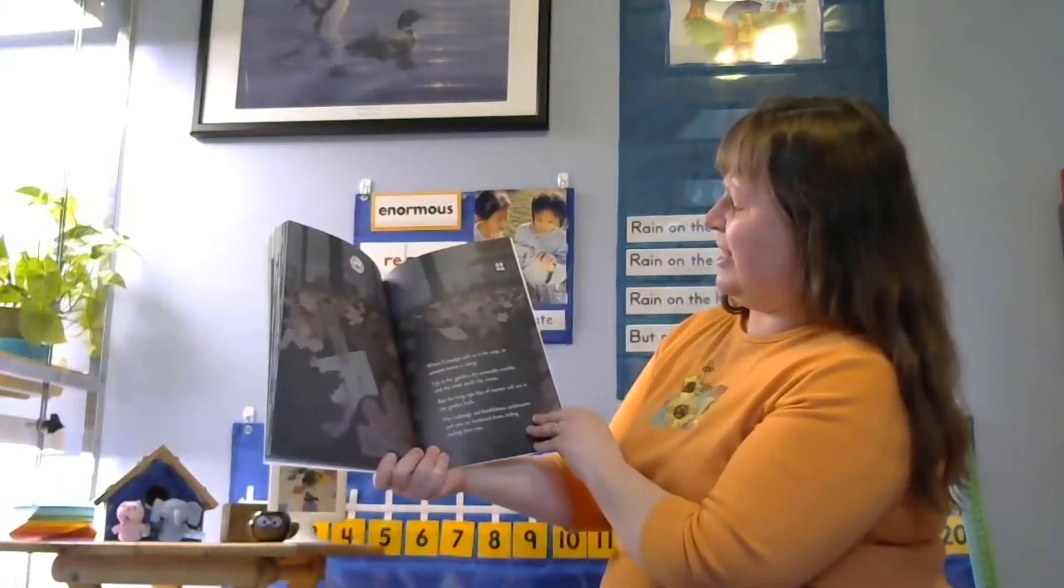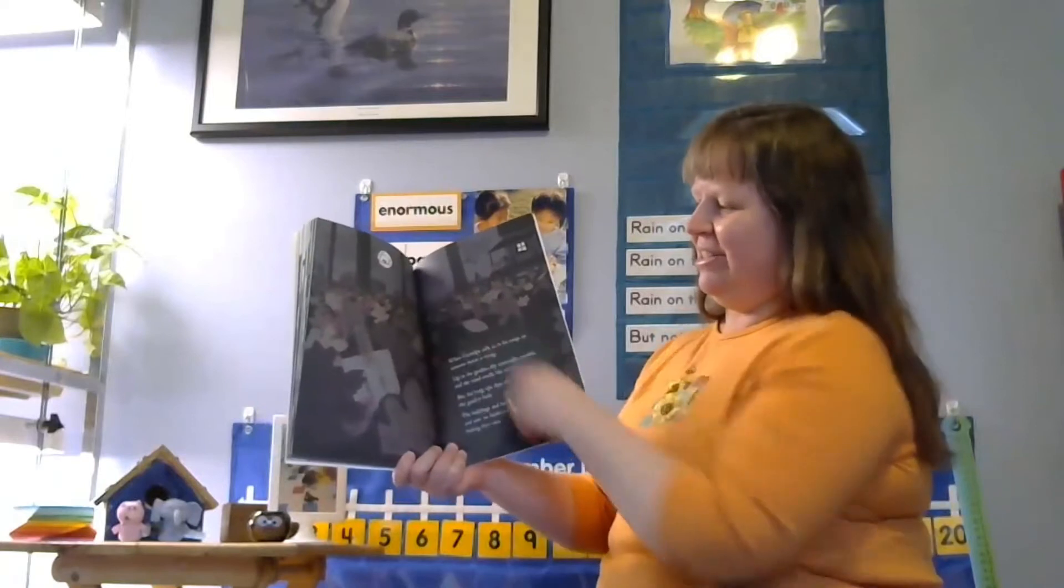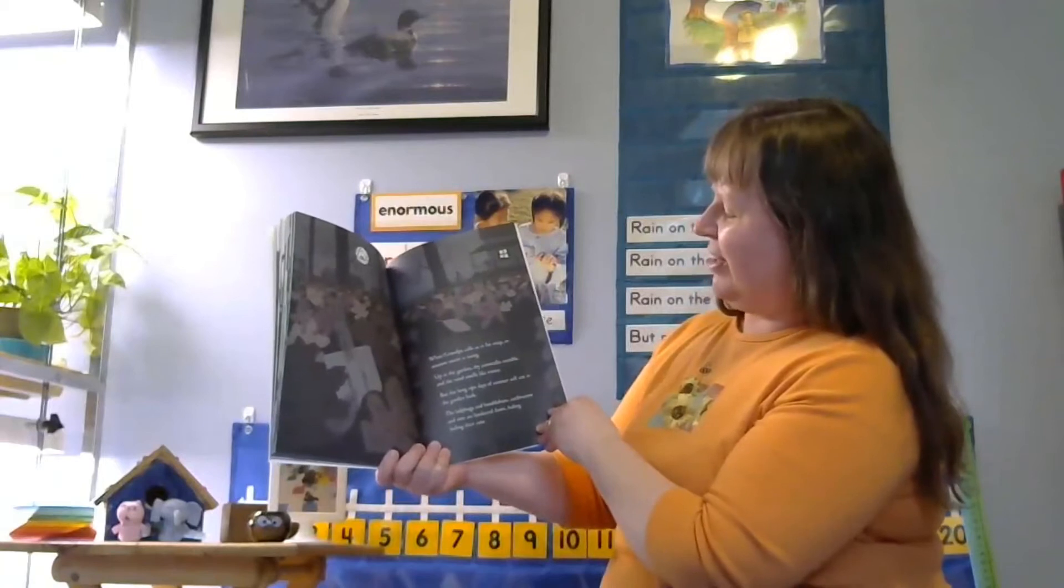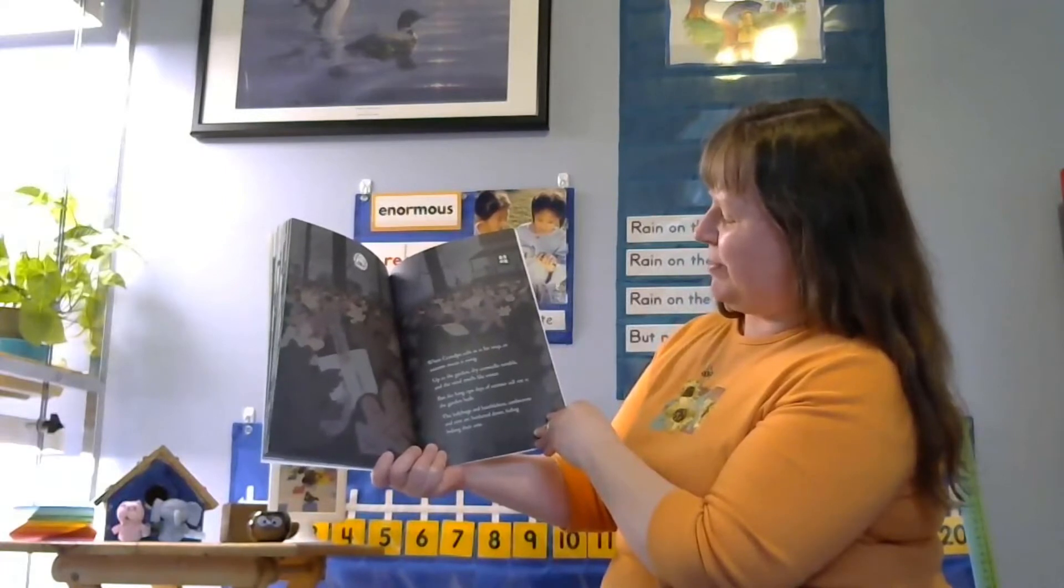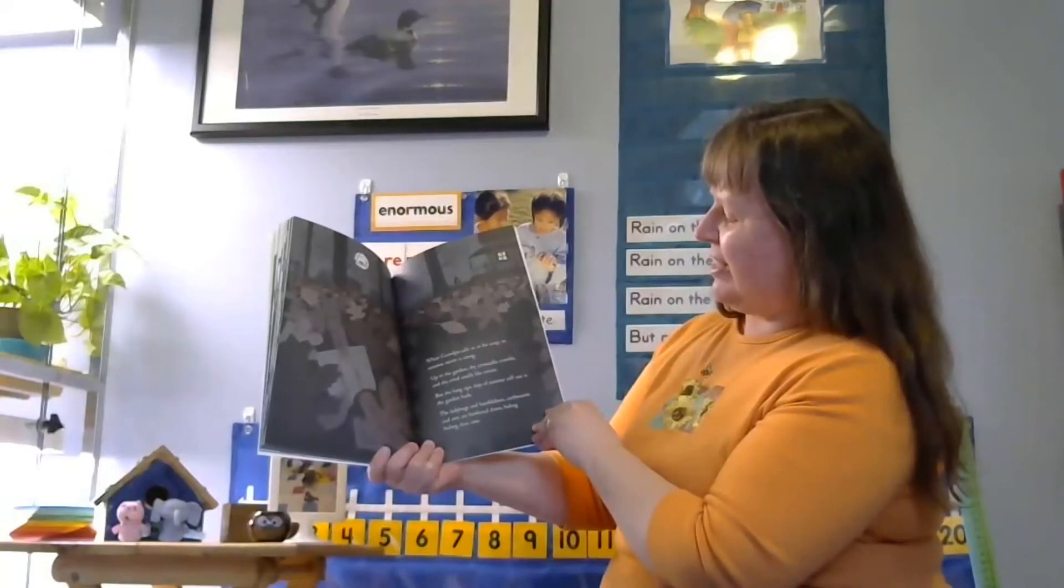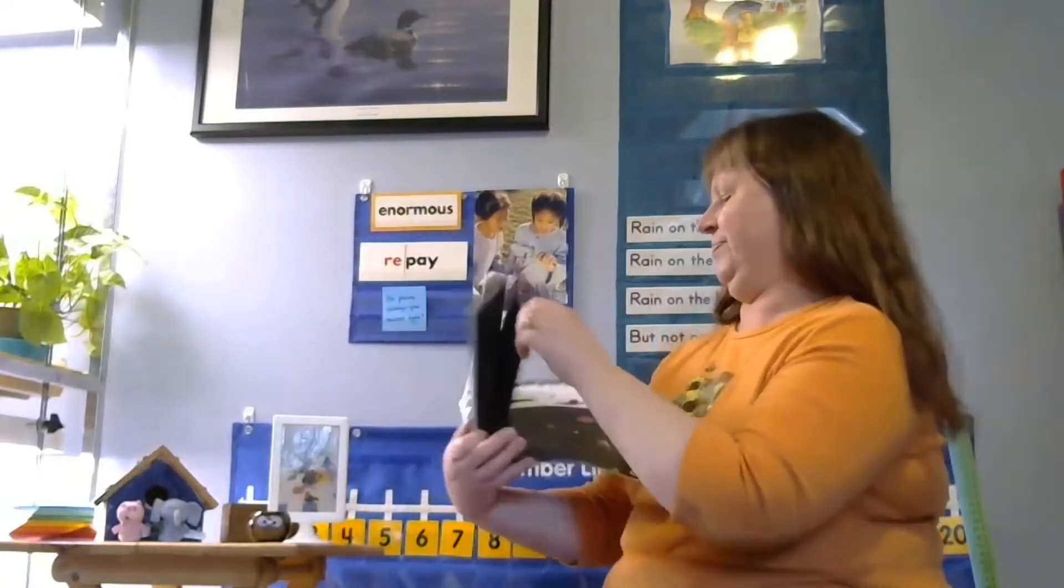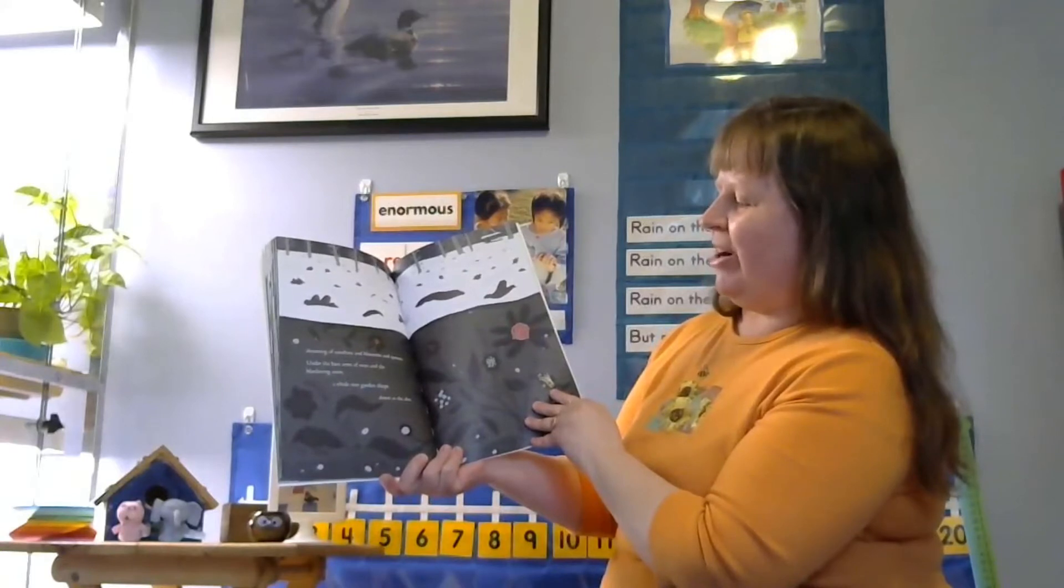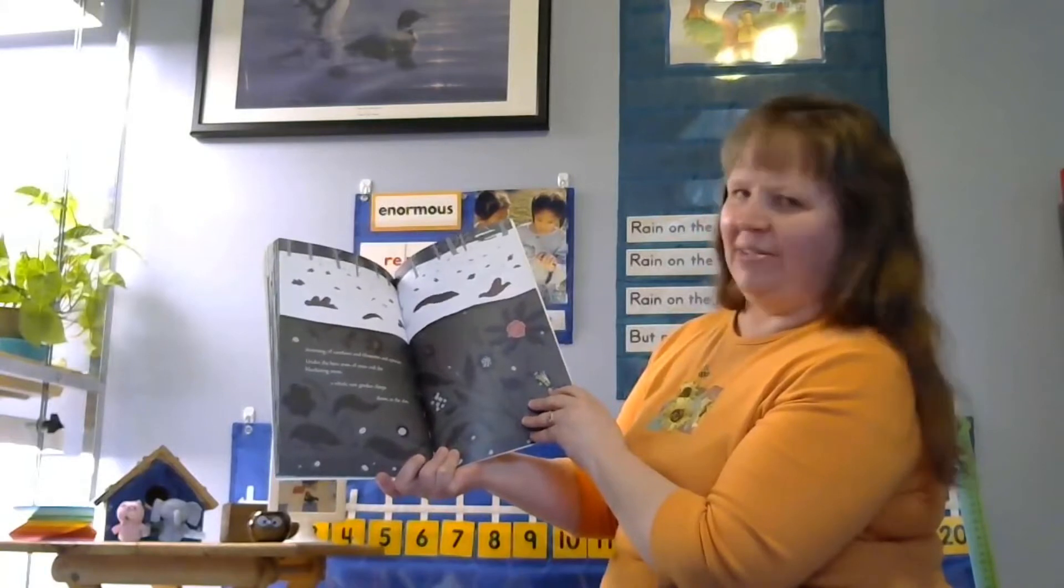When grandpa calls us in for soup, an autumn moon is rising. Remember, autumn means fall. So this is the time of year when everything's starting to go to sleep. Up in the garden, dry corn stalks tremble, and the wind smells like winter. But the long, ripe days of summer still rest in the garden beds. The ladybugs and bumblebees, earthworms and ants are hunkered down, hiding, biding their time. Dreaming of sunshine and blossoms and sprouts under the bare arms of trees and the blanketing snow, a whole new garden sleeps down in the dirt.